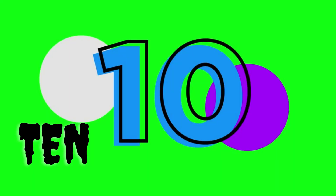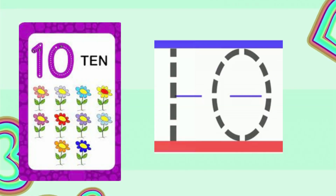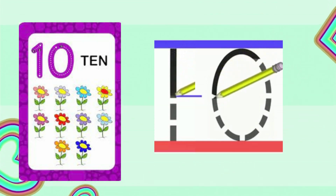Now you know all numbers. Let's write number 10 really quickly. Wow, yummy yummy ice cream! Come, let's count the number of ice creams: 1, 2, 3, 4, 5, 6, 7, 8, 9, and 1 in the girl's hand. Yes, this makes 10 ice creams. Great job! To write number 10, we will write a 1 and a 0.